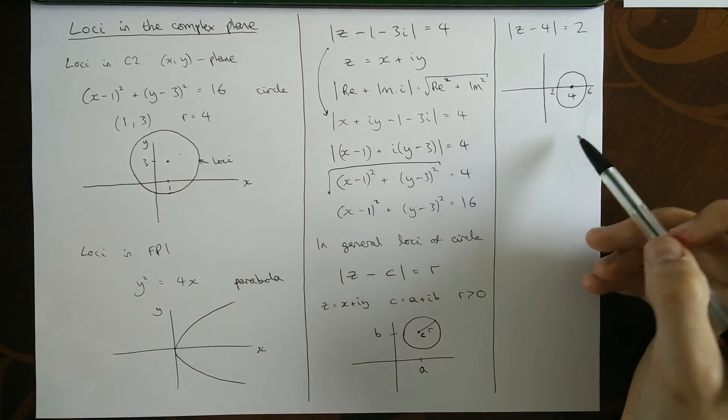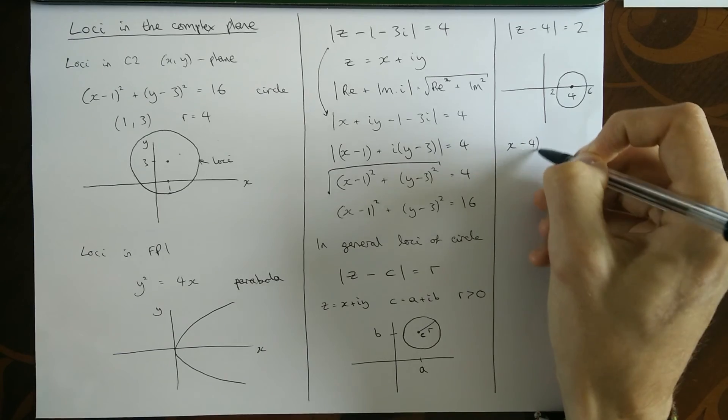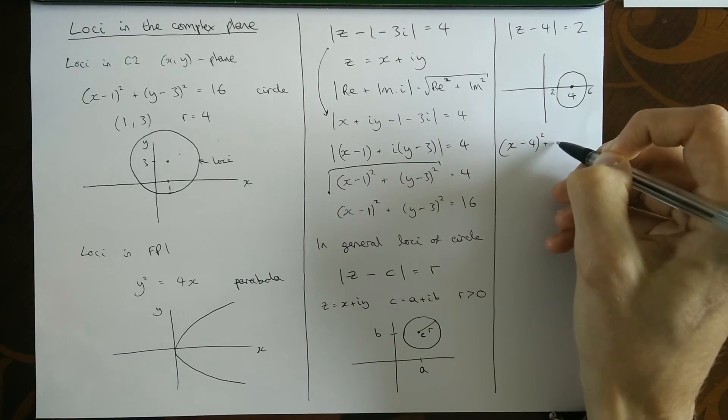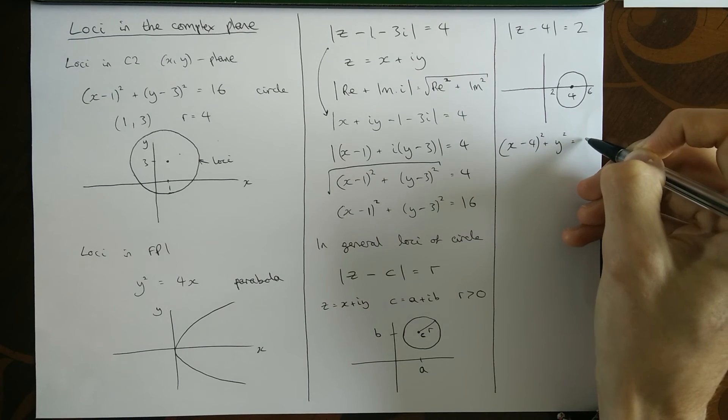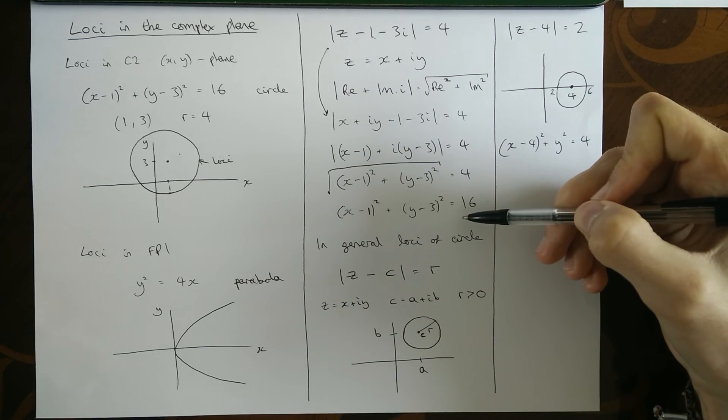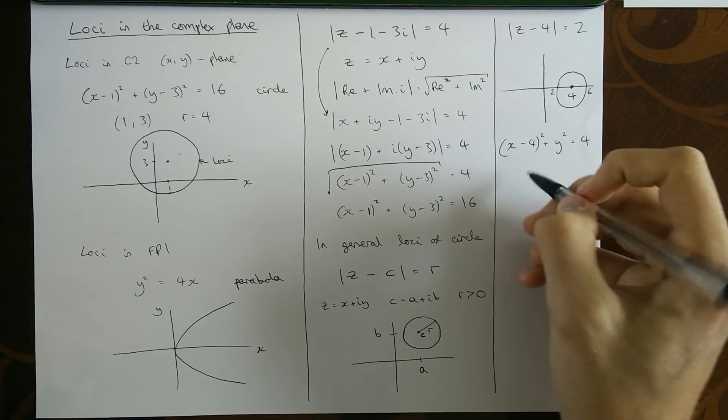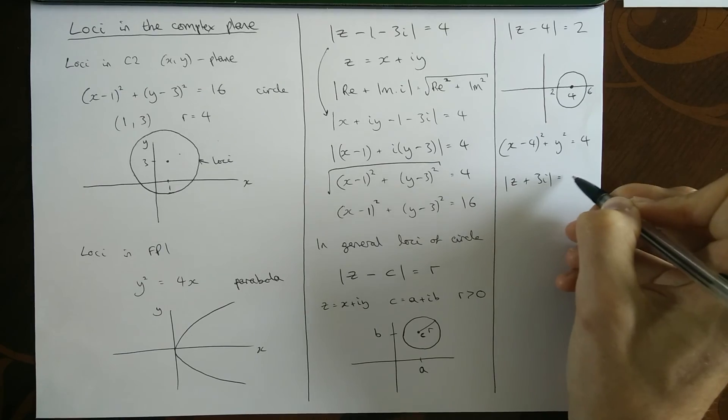Yeah? We could work it out the same way. We'd find out that the equation of the circle would have to be, well, (x - 4)². And then y minus zero squared. So I'll just write this as y². And the radius would be two, so two squared would be four. You'd find that that would become that by doing the exact same process. Another example.